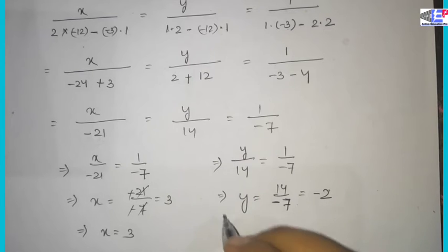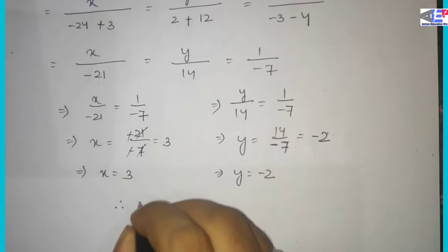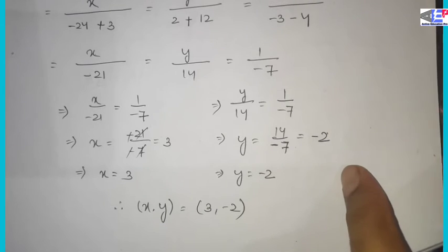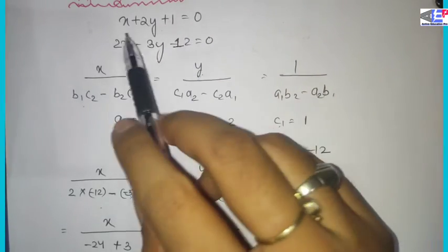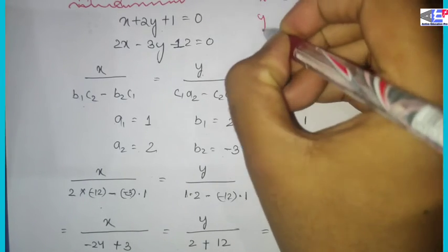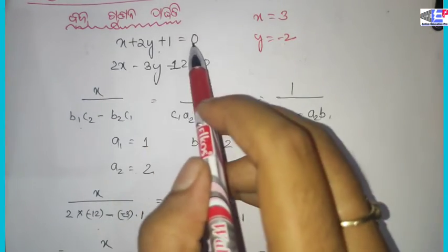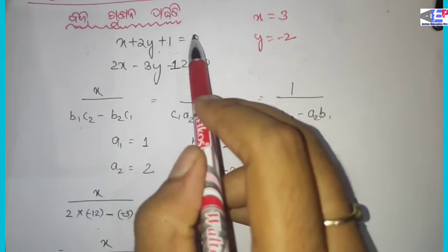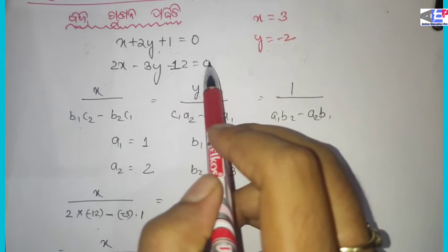Now for y: y by 14 equals 1 by minus 7, so y is equal to 14 divided by minus 7, which equals minus 2. Therefore x equals 3 and y equals minus 2. We can verify using the original equation x plus 2y plus 1 equals 0.